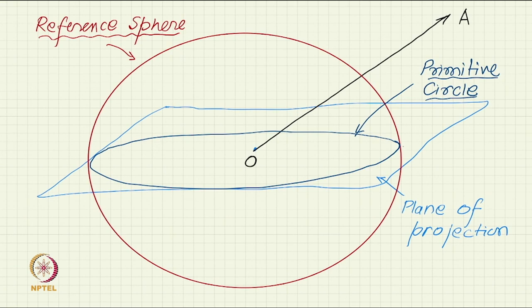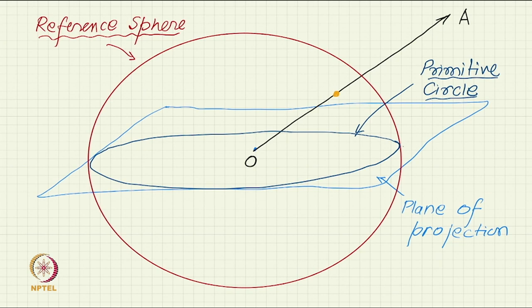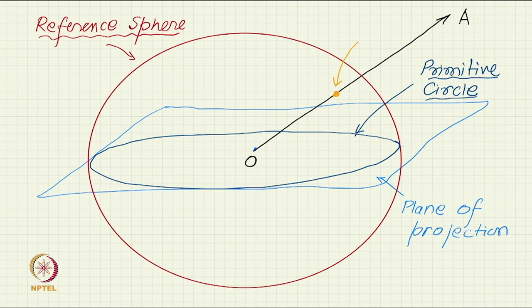Since the direction starts from the origin and goes out to infinity, somewhere it will hit the sphere. We locate that point where the direction hits the sphere. A point on the sphere is a good enough representation of the direction because any point on the sphere, connected to the centre, gives the direction. This itself is a projection of the direction and it is called a spherical projection.